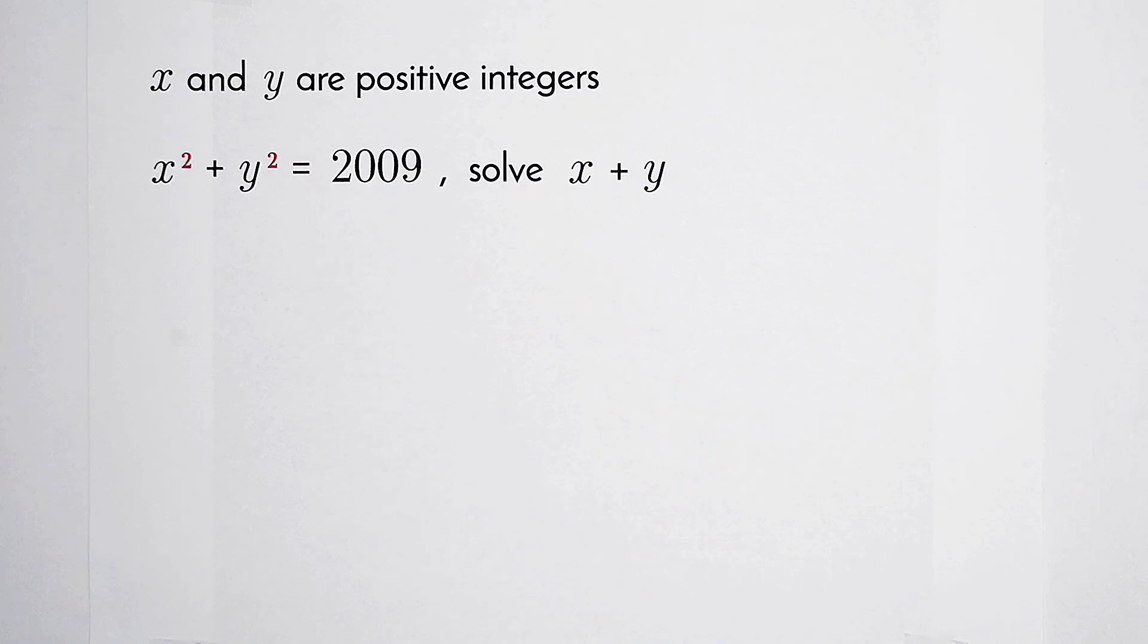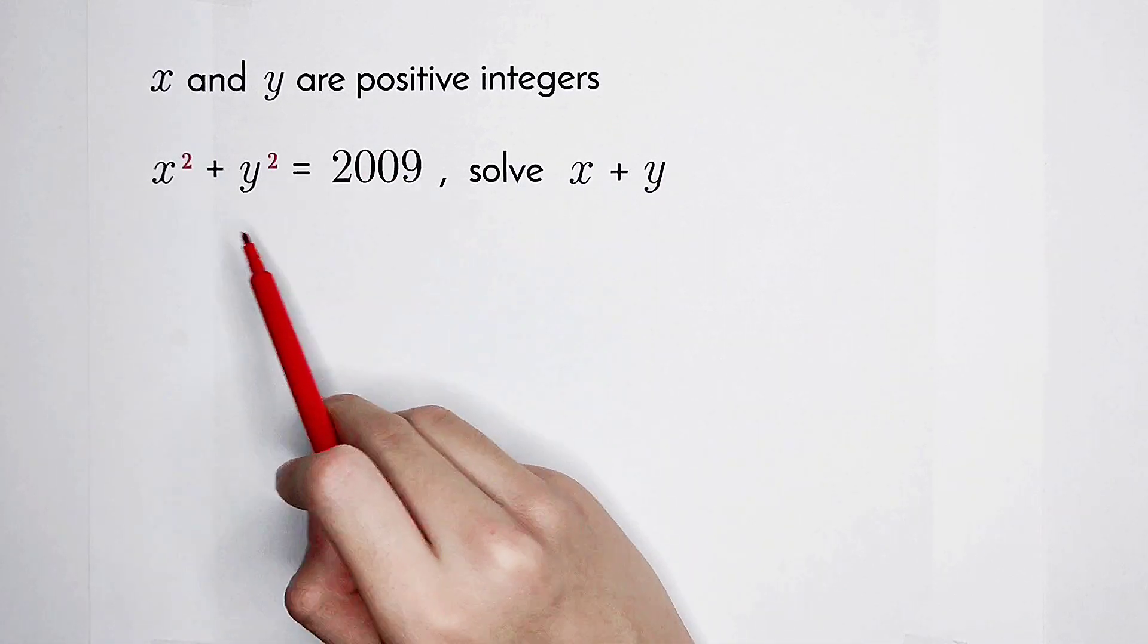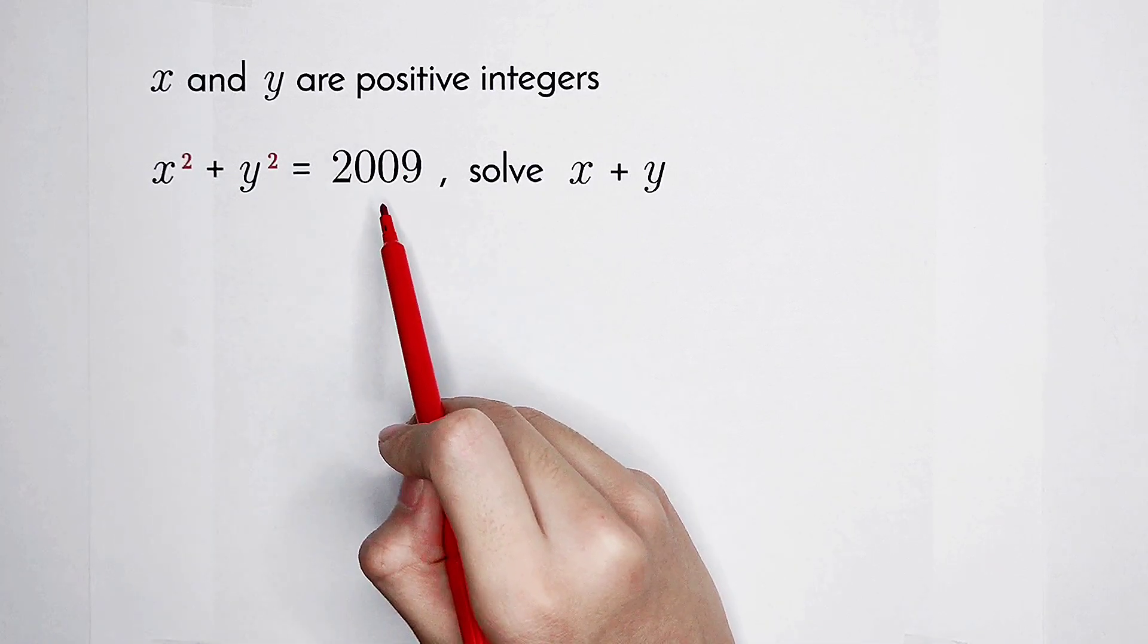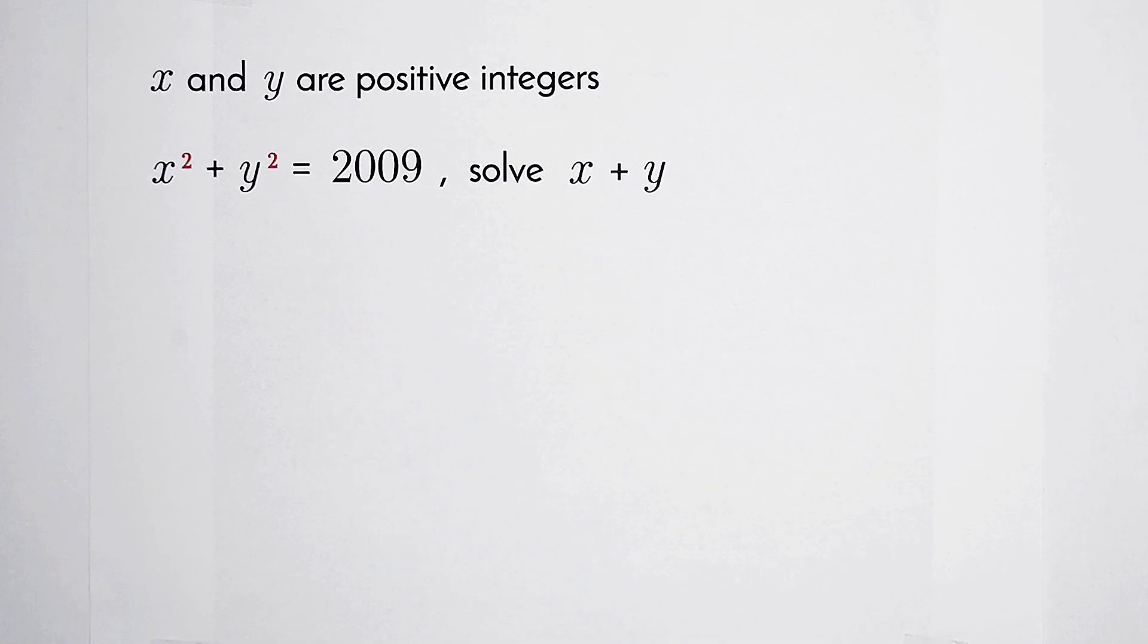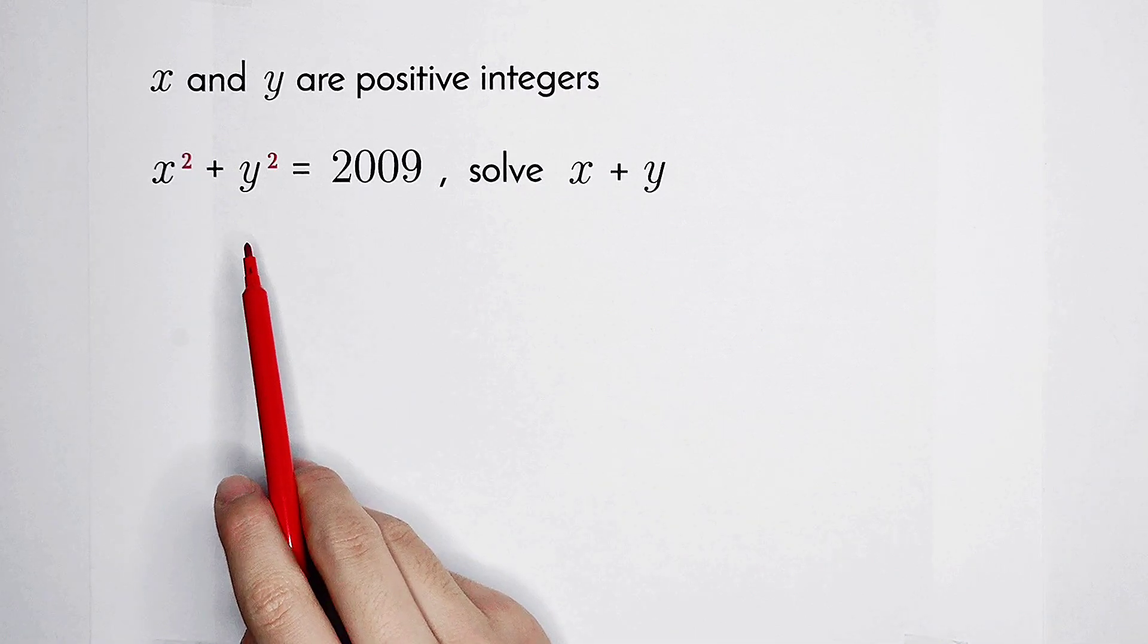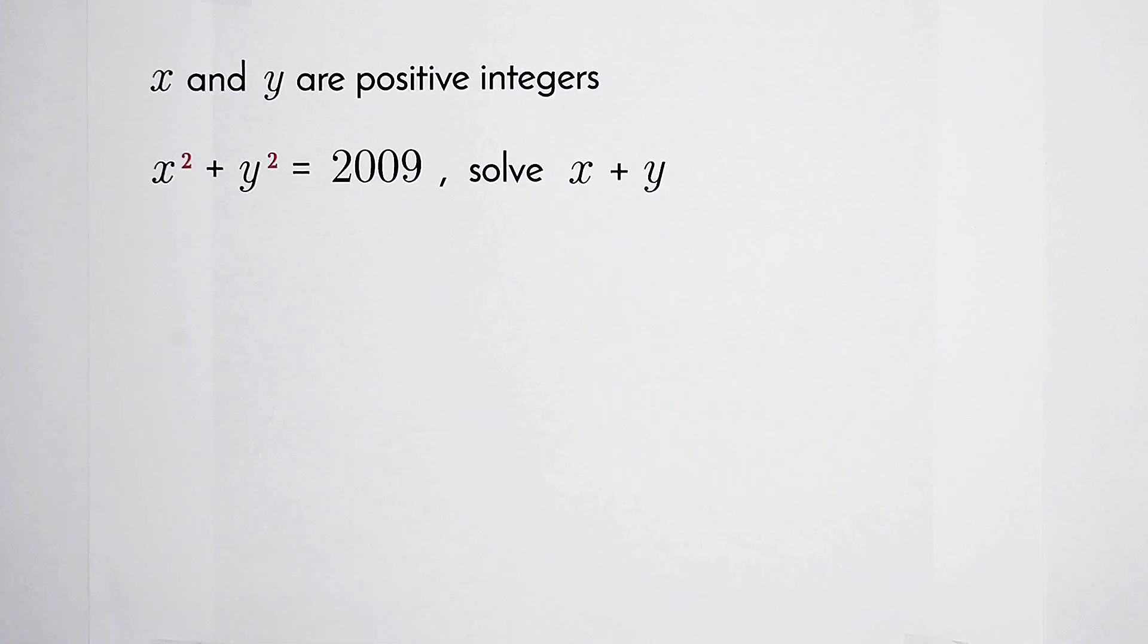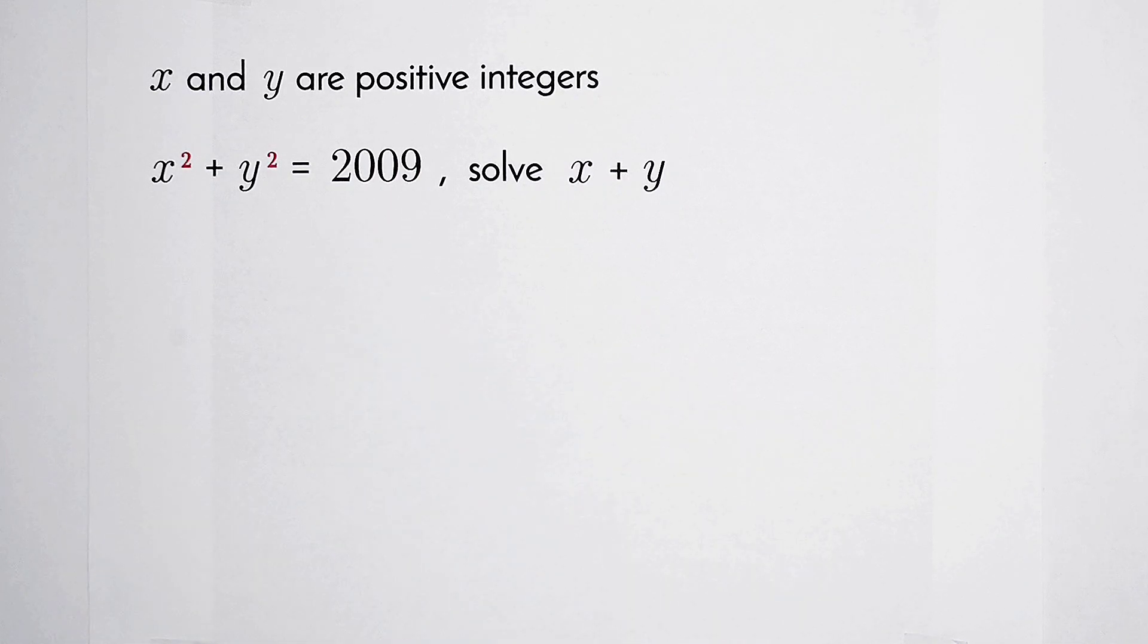How nice it is. How should we start solving it? Now, take a look at this equation. The right hand side is the number 2009, and the left hand side is x squared plus y squared. Because from x squared plus y squared, we cannot get the value of x plus y or the relationship of them directly. So our first step should be some changes of this number. Remember, 2009.